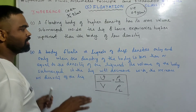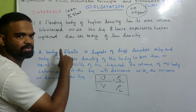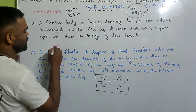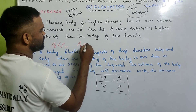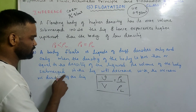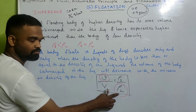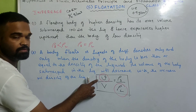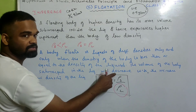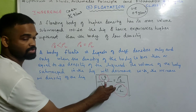Two inferences: First, a floating body of higher density has more of its volume submerged inside the liquid and hence experiences higher upthrust than a body of lower density. Second, a body floats in a liquid only when the density of the body is less than or equal to the density of the liquid. Also, the volume of the body submerged in the liquid will decrease with increase in the density of the liquid — they are in inverse proportion.